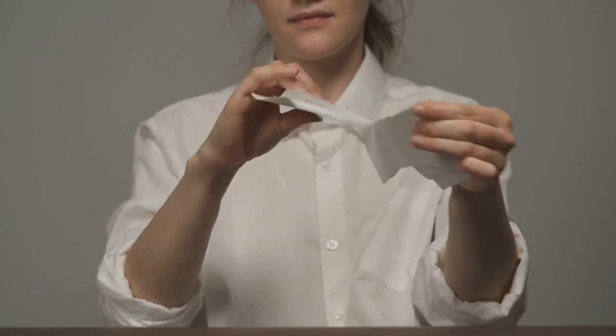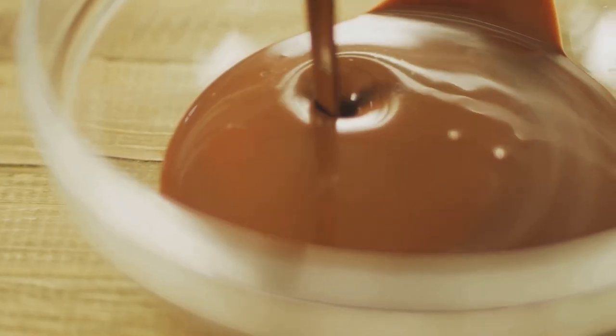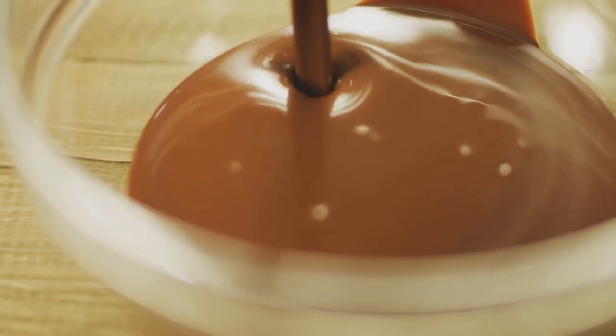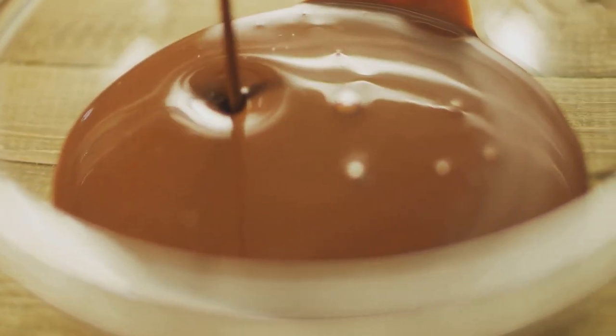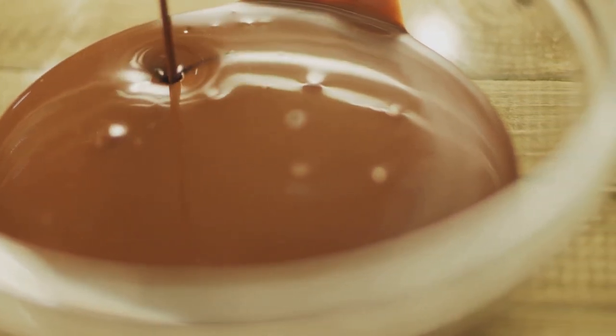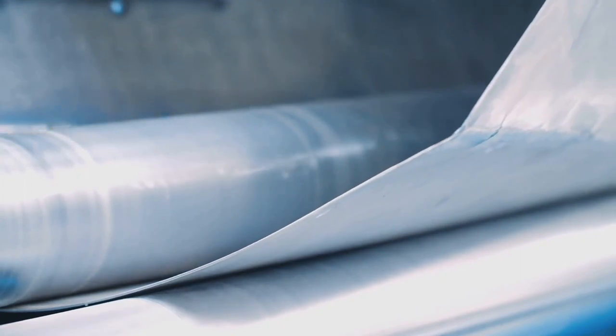Or think about dissolving sugar in your hot cocoa. The sugar seems to disappear, but if you taste it, you know it's still there. These are all examples of physical changes. The key thing about physical changes is that they can usually be reversed. You can uncrumple the paper or let the sugar evaporate out of the cocoa.